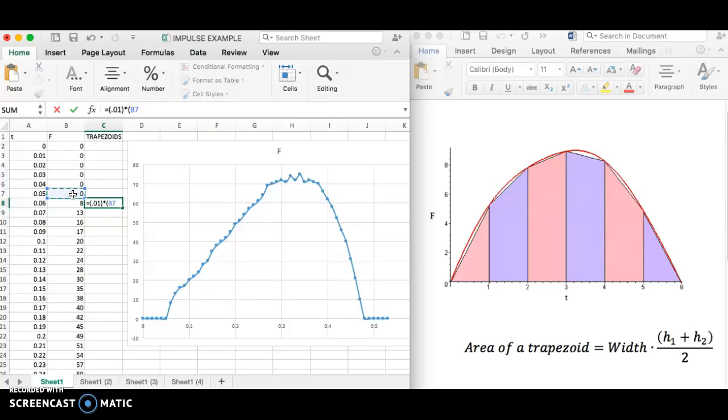So I'm going to click on that cell, or I could type in the name of it, b7. And then plus, the second height for this particular one happens to be 8, which is this value right here. So I will click on that, close my parentheses, and then hit divided by 2 because that was part of the formula. Enter. And 0.04 is the area of that first trapezoid.